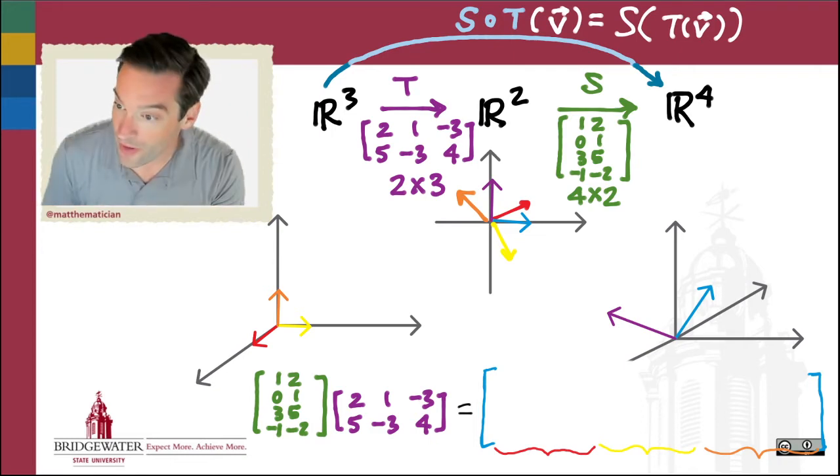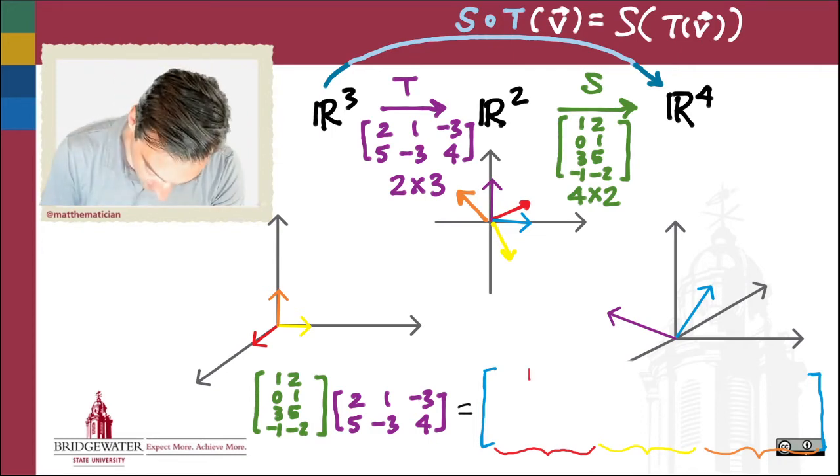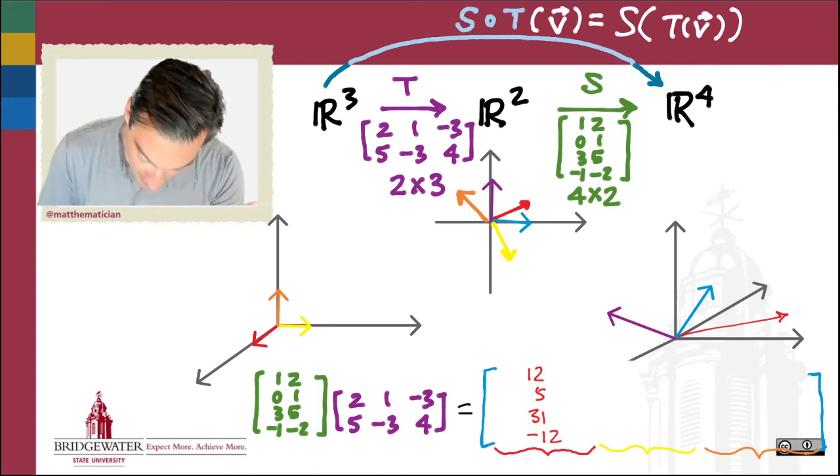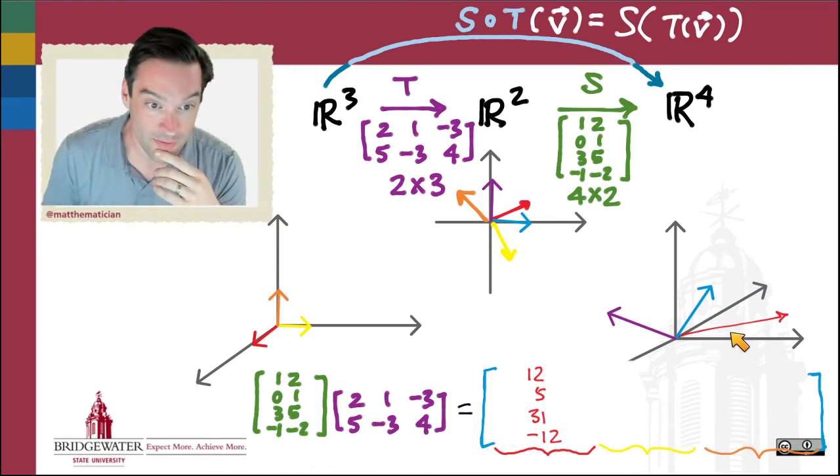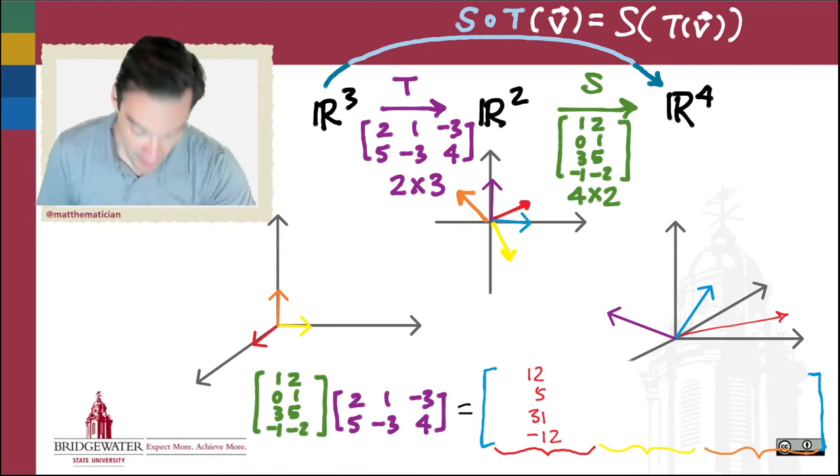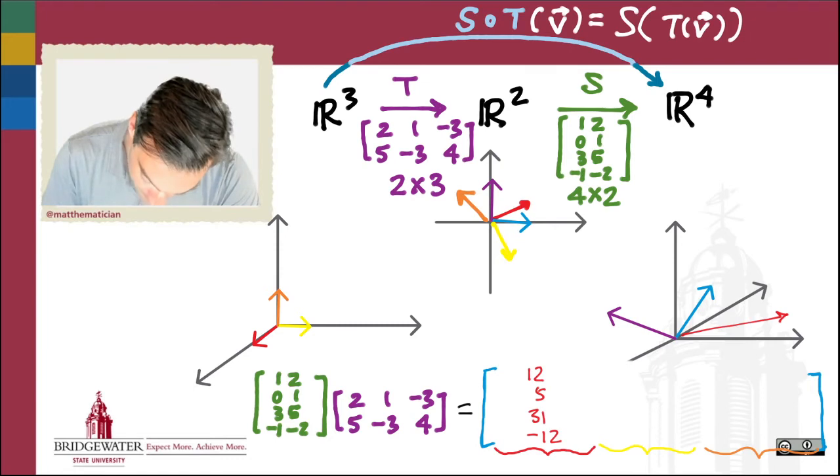You figured out that that column was [12, 5, 31, -12], and that is the image of the first standard basis vector from R³ as a vector in R⁴—the result of applying first T to the standard basis vector and then S to that.